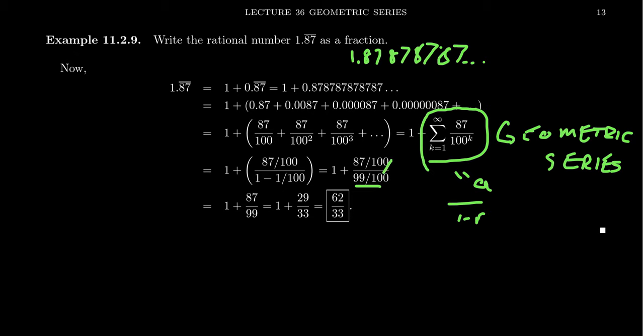As you simplify this fraction, the 100s will cancel out, and you end up with 1 plus 87 over 99. If you choose, you can simplify that fraction. 87 over 99 becomes 29 over 33.